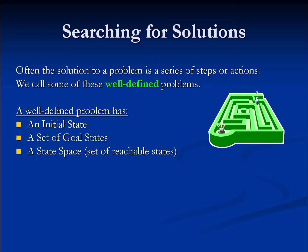So in a path planner, the state space includes all of the locations we can get to from the starting point. In a game of chess, it's all the valid board configurations we can get to — the arrangements of pieces we can get to by moving pieces around on the board by legal moves.